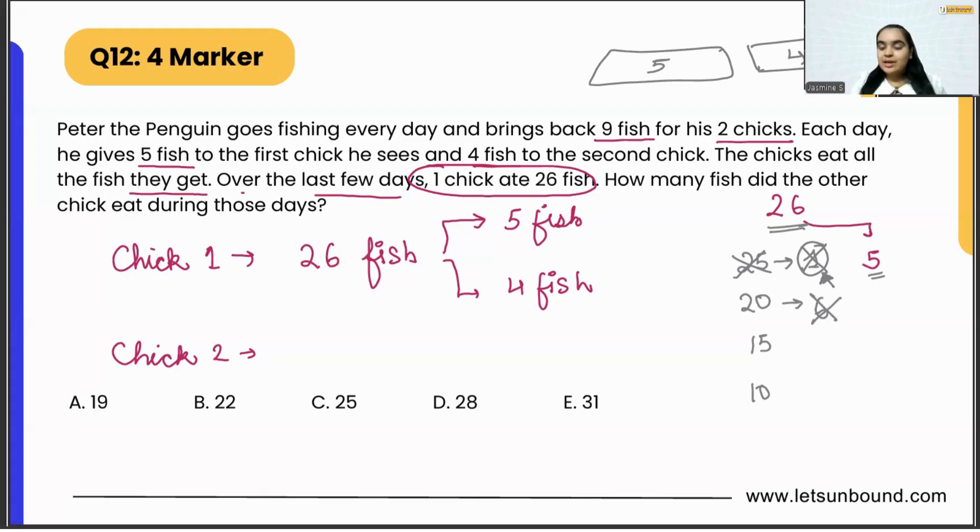Now if we see 15, let's say for the starting few days, for the first three days five plus five plus five, the chick is eating five fishes, but for the rest of the days it should be four. Let's see: 26 minus 15 is 11, and 11 is again not divisible by four, so we cannot split into fours.